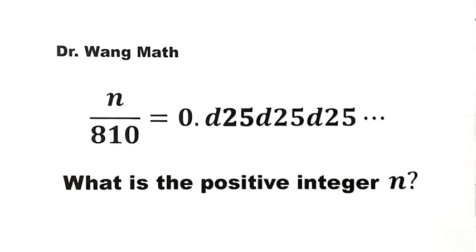In this video, we will solve a question from the Chinese Maths Olympiad. Given n over 810 equals 0.d25d25d25 and so on.